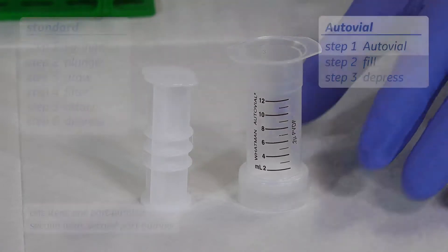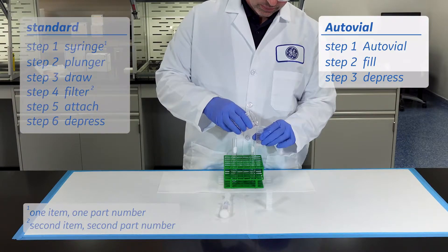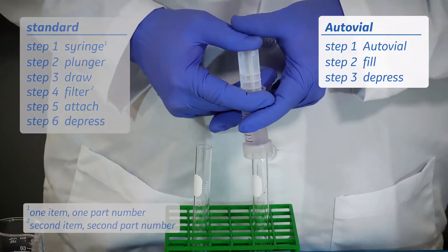Okay, let's start. Retrieve the autovial and fill it with your sample. Now depress the plunger, filtering the sample.